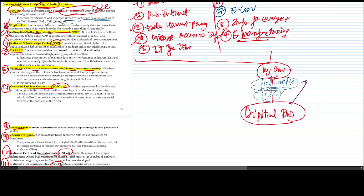Next part after e-governance is Digital Locker. Digital Locker is a platform to enable citizens to securely store and share their documents with service providers who can directly access them electronically. It's a cloud-based service where you can keep your documents, and this also generates some limitations which we will discuss.